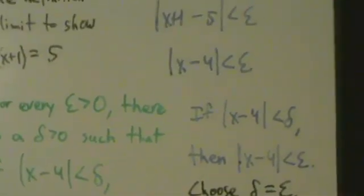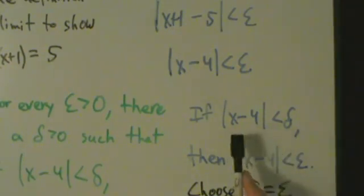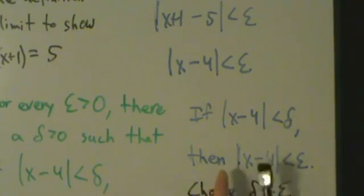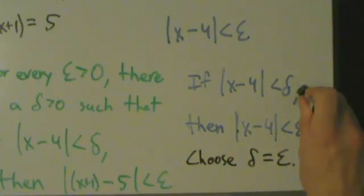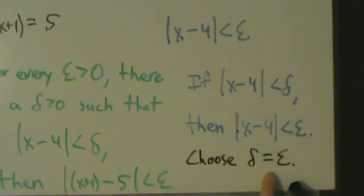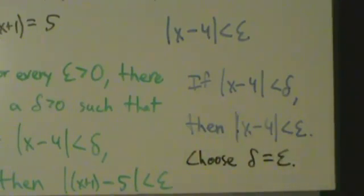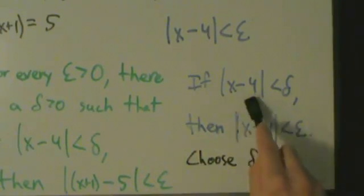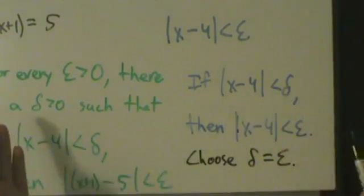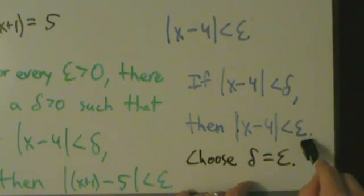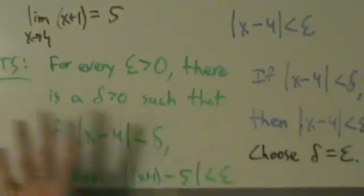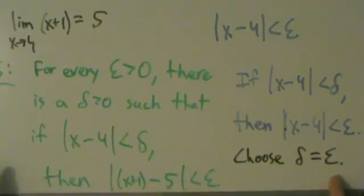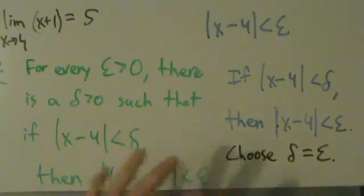For every epsilon greater than zero, there is a delta that depends on the epsilon such that if this is true, then this is true. We want to guarantee that if absolute value of x minus 4 is less than delta, then absolute value of x minus 4 is less than epsilon. We can guarantee that just by choosing delta equal to epsilon, because if delta equals epsilon, then this happens automatically. This isn't really very illuminating, because nothing interesting is happening here — we just chose delta equal to epsilon.